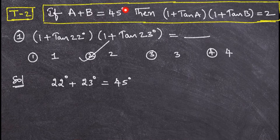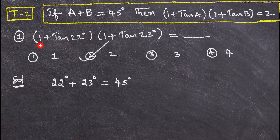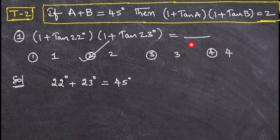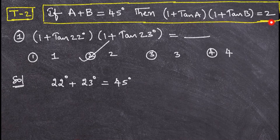Before that, we will see a few problems. You see question number 1: (1 + tan 22°)(1 + tan 23°) = what? Here it's somewhat clueless, but as we know this trick, (1 + tan a)(1 + tan b) = 2, we can write this very easily.